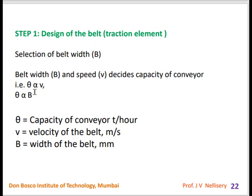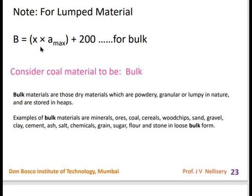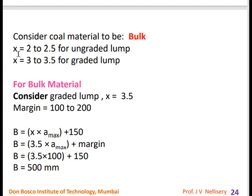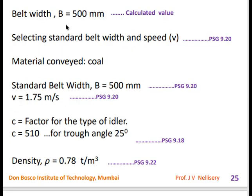To find belt dimensions: capacity is proportional to velocity and belt width. For lumped material, belt width B = x × a_max + 200, where x = 2 to 2.5 for ungraded lump and x = 3 to 3.5 for graded lump. Since coal lumps are assumed graded, x = 3.5 and margin = 100, giving B = 500 mm. The standard value from the design data book confirms B = 500 mm.